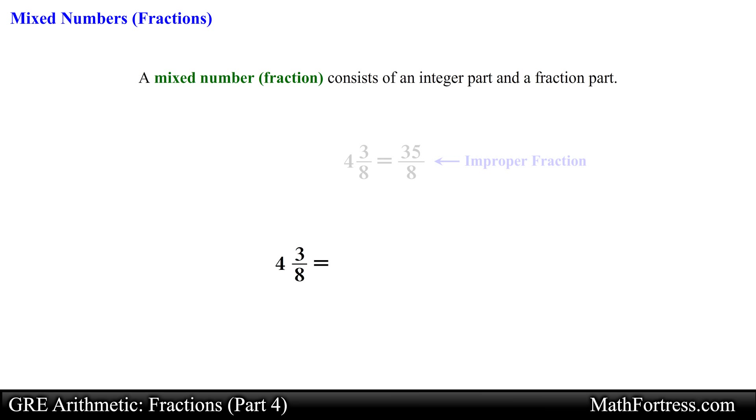Alternatively we can rewrite the mixed number slightly faster by first taking the denominator of the fraction part, in this case 8 and multiplying it by the integer, in this case 4, obtaining 32. We take this result and add this number to the numerator of the fraction, in this case 3, which results in 35.